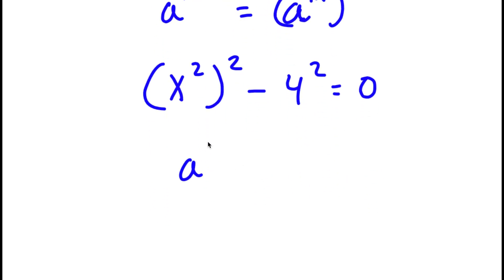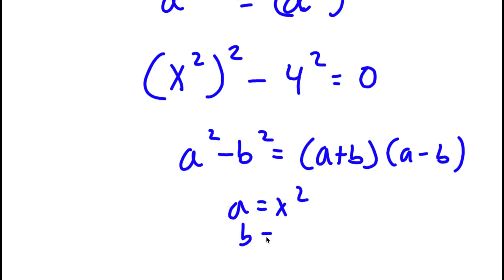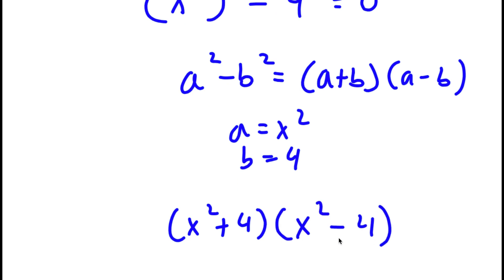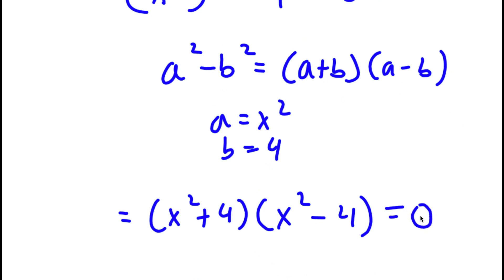Now, if I have something in the form a squared minus b squared, this is equal to a plus b times a minus b. So in this case, a is equal to x to the power of 2 and b is equal to 4. So I have x to the power of 2 plus 4 times x to the power of 2 minus 4, and this is equal to 0.